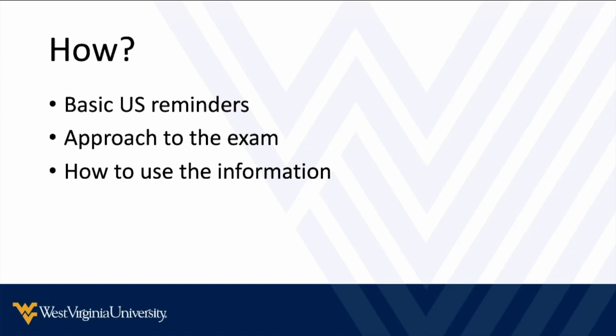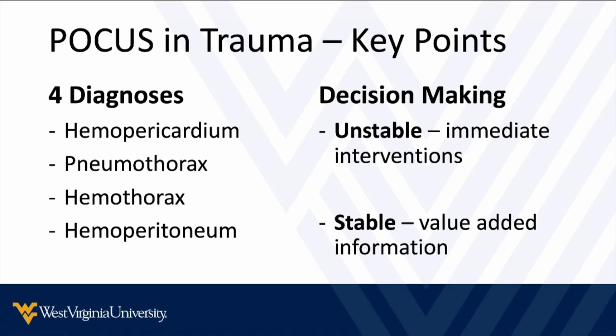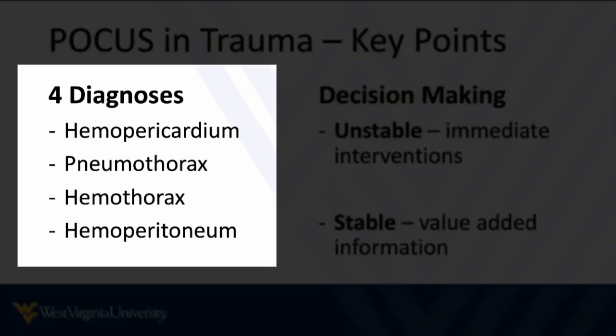Let's go through the reminders again. Point of care ultrasound trauma — the FAST exam can diagnose four things: hemopericardium, pneumothorax, hemothorax, or hemoperitoneum. Nowhere in that list are parenchymal injuries, retroperitoneal injuries, femur fractures causing shock, cardiogenic shock from blunt myocardial injury, or spinal shock. There are other causes of shock in trauma that the FAST exam doesn't cover, however the most common ones are covered.